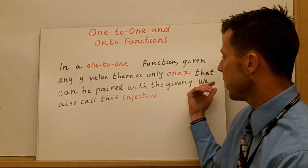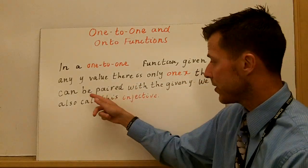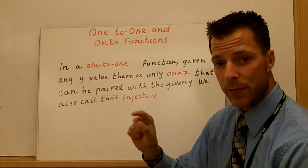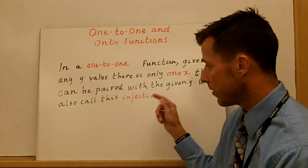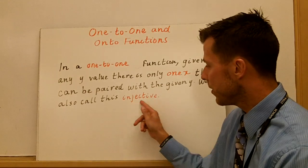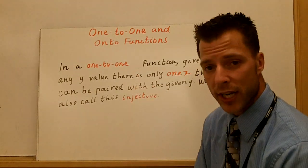And the idea here, in layman's terms, and that's hard for me to understand, is that every y is paired with only one x, and it's got to be a different x. And we call this one-to-one or injective.